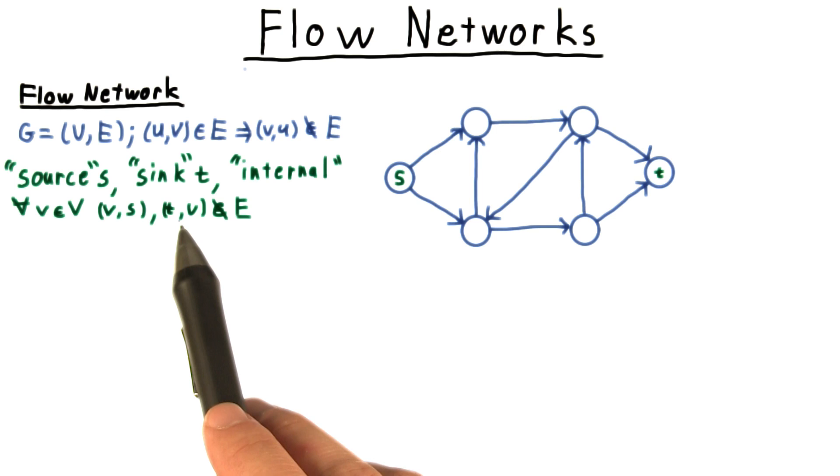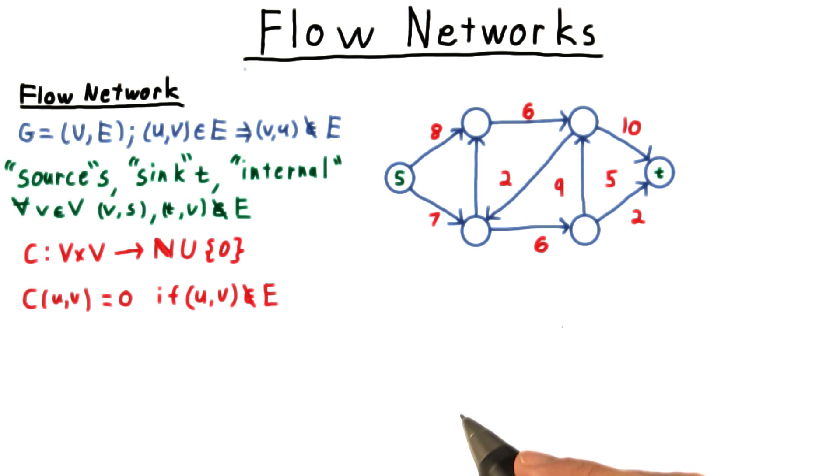Associated with every pair of vertices is a capacity, which indicates how much flow it is possible to send directly between two vertices. We'll assume that these capacities are always non-negative integers. This will make some of the arguments easier, and it's not a serious limitation. In fact, the last algorithm we see will overcome it. Also note that if there is no edge in the graph, then the capacity is defined to be 0.